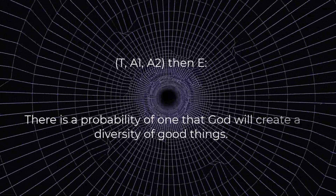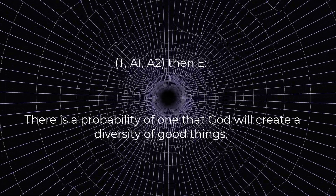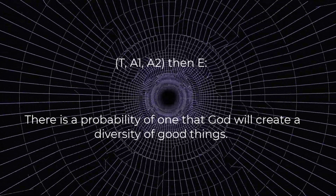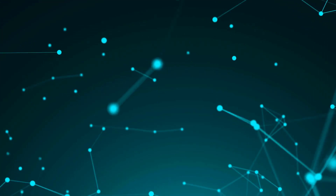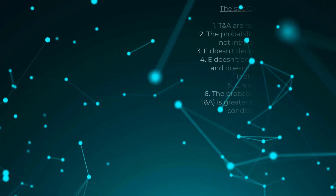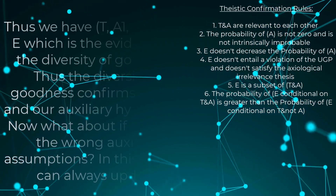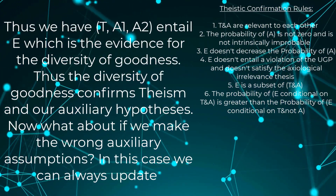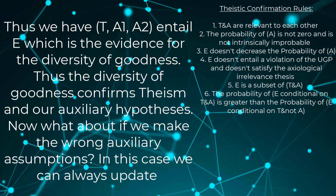So if we combine the diffusiveness and plenitude principles, we get a sort of goodness principle by which goodness requires a variety of other good things to fully manifest itself. This means God will ground all of the entities that can successfully manifest his goodness fully. Combining theism with these auxiliary assumptions, we get the conclusion that there is a probability of one that God will create a diversity of good things. Thus, any time we can join theism with auxiliary assumptions about value and filter it through our confirmation rules, we will always increase the probability of theism. We have TA1, A2 entail E — the evidence for the diversity of goodness — and so the diversity of goodness confirms theism and our auxiliary hypotheses.